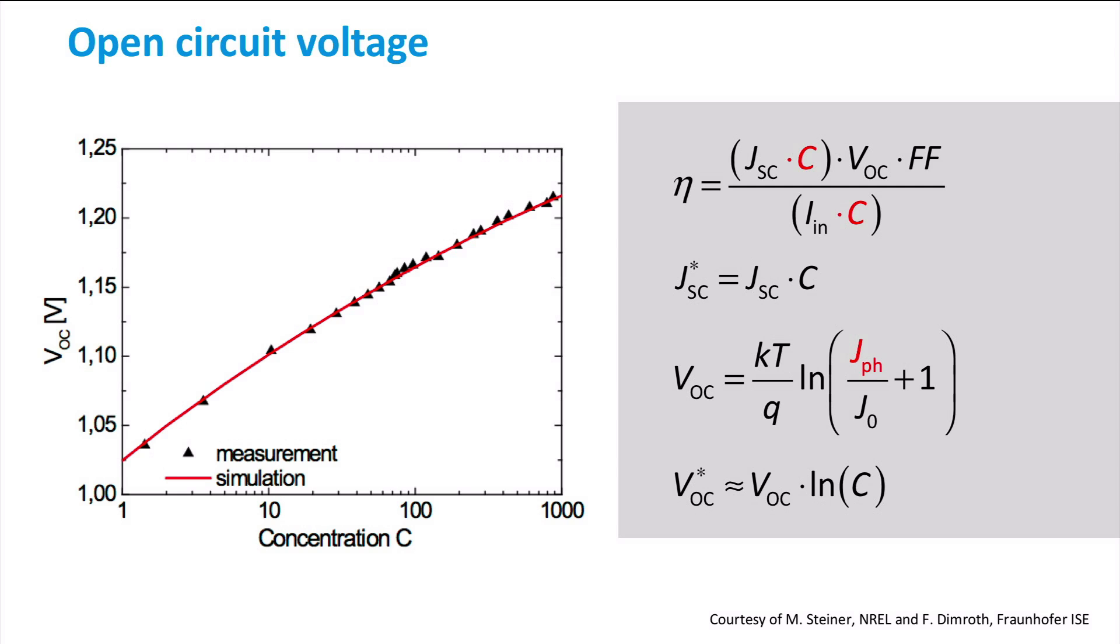We can see this relation in this graph by Steiner and Dimrod, where the horizontal axis has a logarithmic scale. The fill factor will not change for moderate light concentration. Since the JSC increases proportionately and the VOC increases logarithmically with increasing light concentration, the efficiency of the solar cell will increase with increasing concentration.